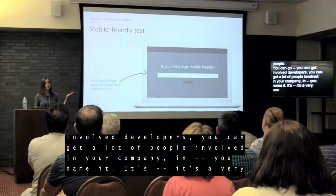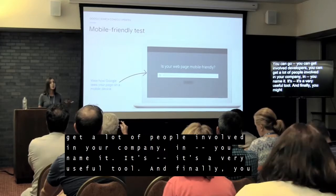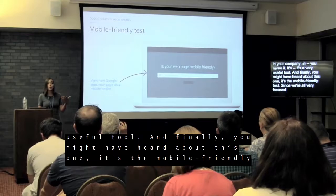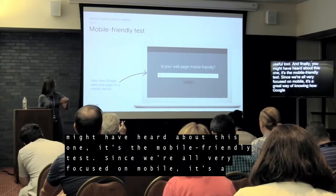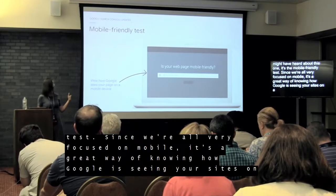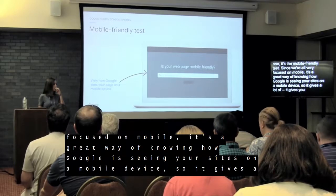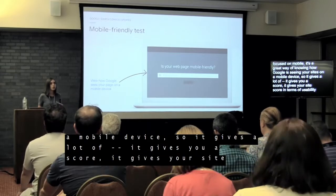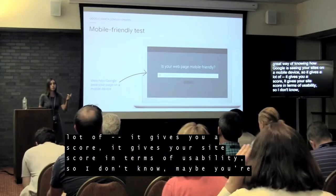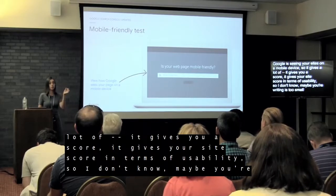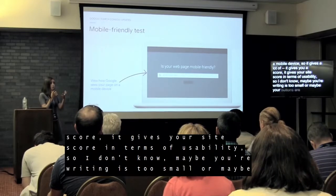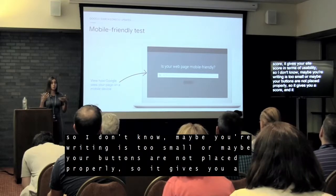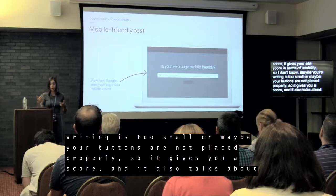Finally, there's the mobile-friendly test. Since we're all focused on mobile, it's a great way to see how Google sees your site on a mobile device. It gives your site a score in terms of usability — for example, if your text is too small or your buttons aren't placed properly. It also gives you a speed score, showing how long it takes for your site to load.